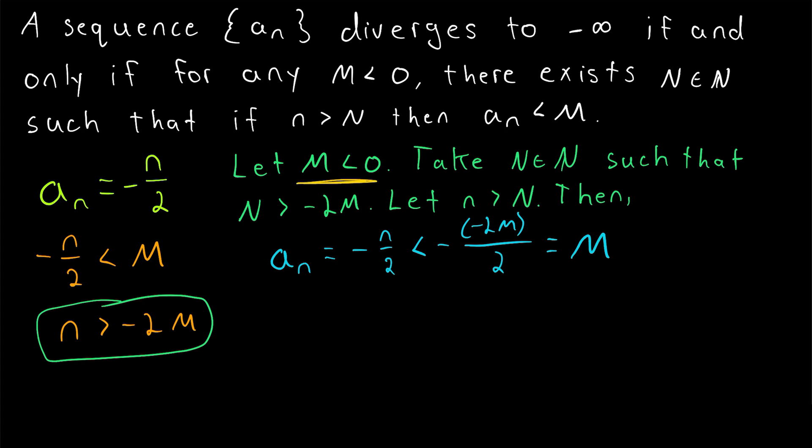Thus, we've shown for any arbitrary negative M value, as long as big N is greater than negative 2M, then every term of our sequence after the big Nth term, every term of our sequence after that is less than M. Thus, this sequence diverges to negative infinity.